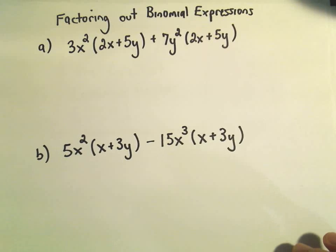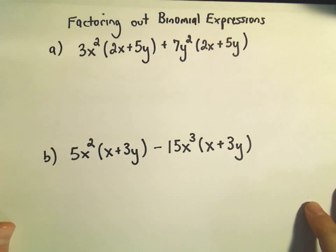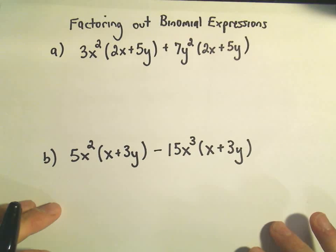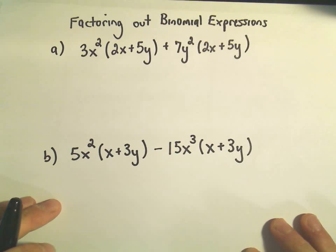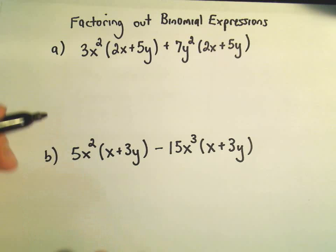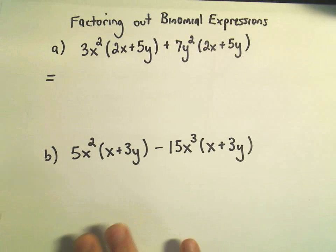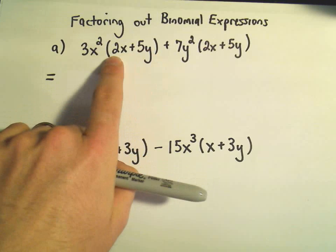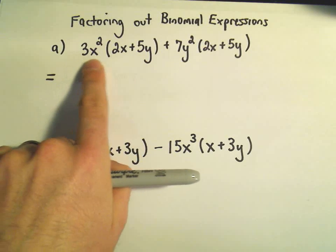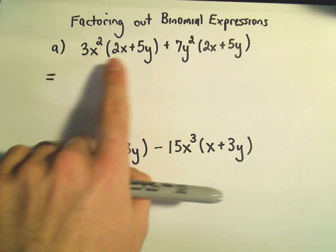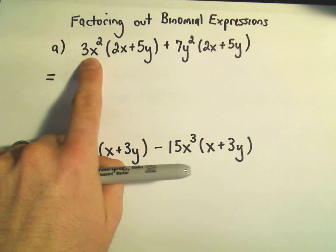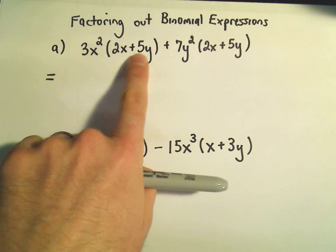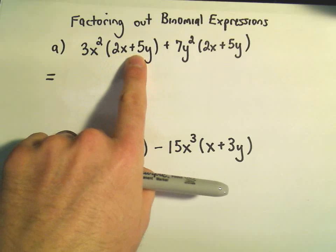Sometimes this is enough to throw people off when they see things in parentheses, but the idea is exactly the same. In this case, I'm recognizing visually I see 3x squared times a set of parentheses, this 2x plus 5y. This is all one term. The 3 is a factor, the x squared is a factor, and then to me I see the 2x plus 5y is a factor.